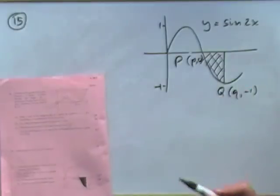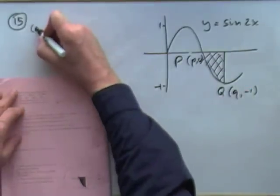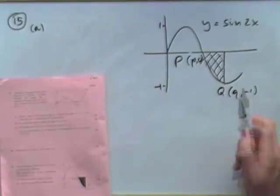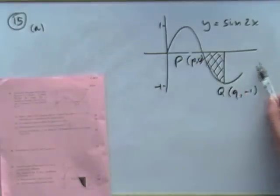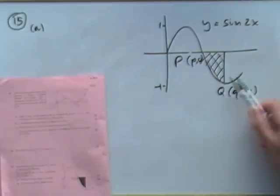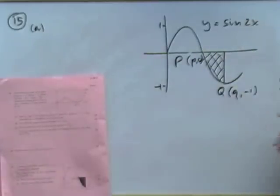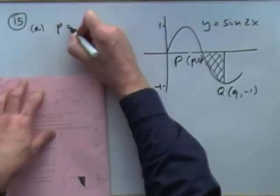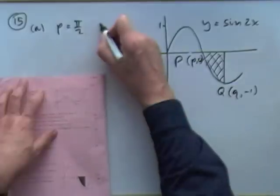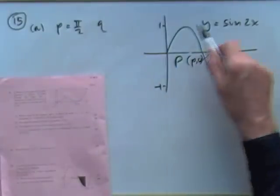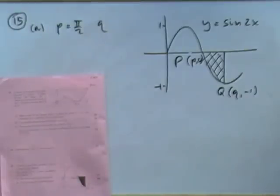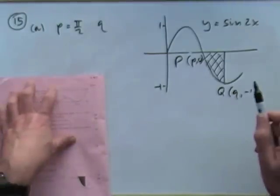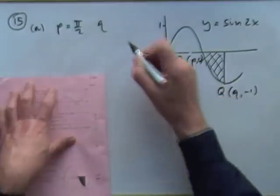Part a: write down the values of p and q. For sin 2x, instead of going all the way to 2π, it's squashed to π. So the first zero crossing after the peak happens at π/2: p equals π upon 2. The value q would be at 3π/2 for the standard curve, which squashed by a half gives 3π upon 4.